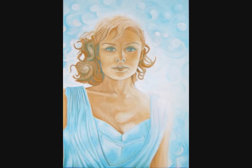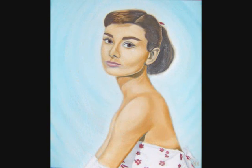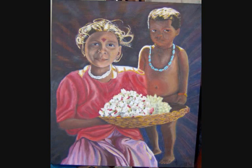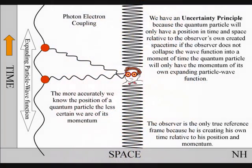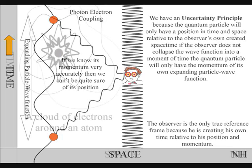At a fundamental quantum level, the observer is the observed within his or her own created space-time. Therefore, the more accurately we know the position of a quantum particle, the less certain we are of its momentum. And if we know its momentum very accurately, then we can't be quite sure of where it is.